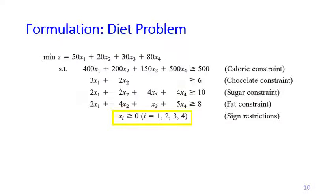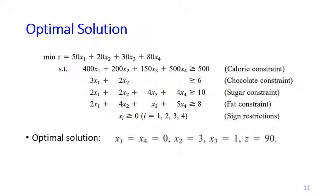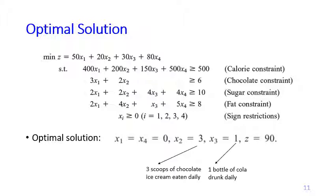Finally, you need the sign restrictions: x1, x2, x3, and x4 must all be greater than or equal to 0, meaning the amount of food you eat must be zero or positive — you cannot eat minus 3 pieces of brownie. If we solve this problem, the optimal solution says we need to eat 3 scoops of chocolate ice cream daily and drink one bottle of cola, satisfying all constraints and sign restrictions at a minimum cost of 90 cents.